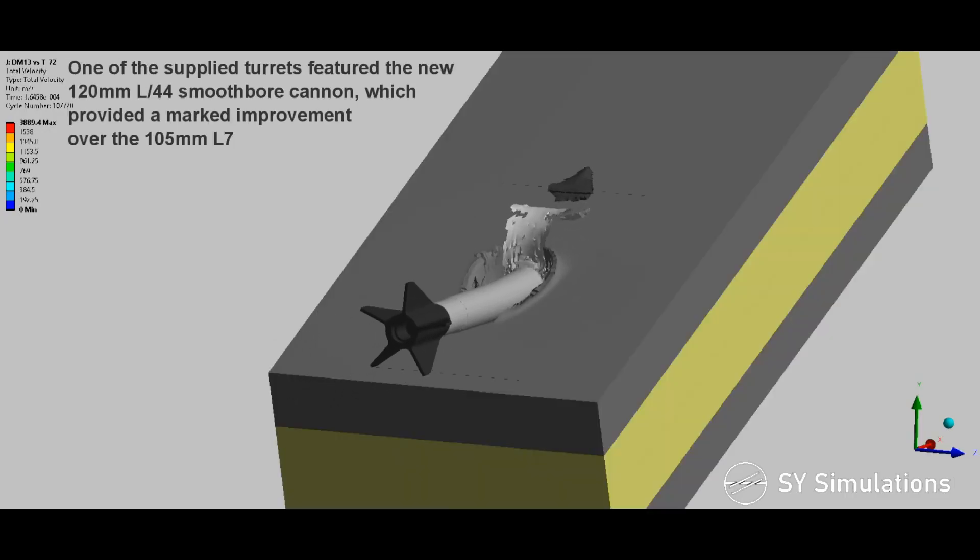One of the supplied turrets featured the new 120mm L44 smoothbore cannon, which provided a marked improvement over the 105mm L7.